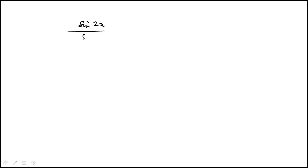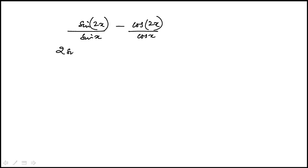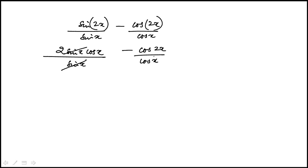Here we're given this trigonometric expression and we need to find an equivalent form: cosine 2x over cosine x. So sine 2x is 2 times sine x cosine x, and we're dividing it by sine x, so that part goes away. I also need to rewrite cosine 2x in a useful form.